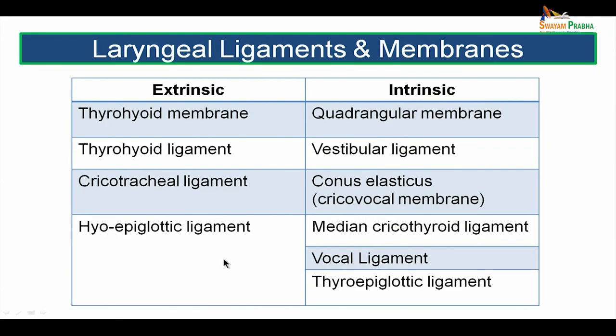The laryngeal ligaments and membranes. Extrinsic membranes include the thyrohyoid membrane, extending from the superior border of the thyroid cartilage to the hyoid bone. The posterior thickened border of the thyrohyoid membrane is the thyrohyoid ligament. The cricotracheal ligament extends from the lower border of the cricoid cartilage to the tracheal rings below. The hyoepiglottic ligament attaches between the hyoid bone anteriorly and the anterior surface of the epiglottis posteriorly. These structures — the thyrohyoid membrane and ligament — are pierced by the internal laryngeal nerve and the superior laryngeal artery.